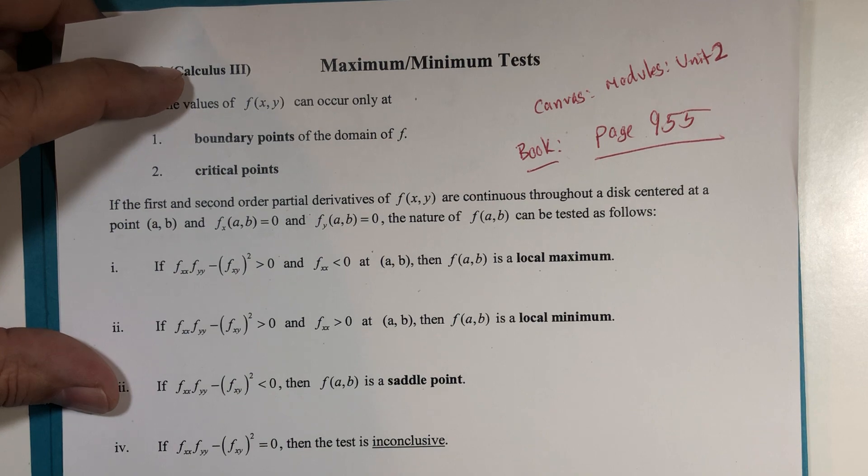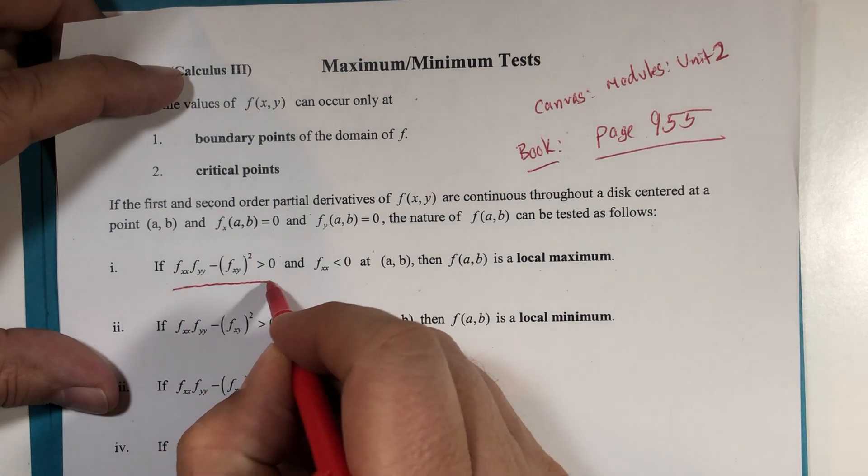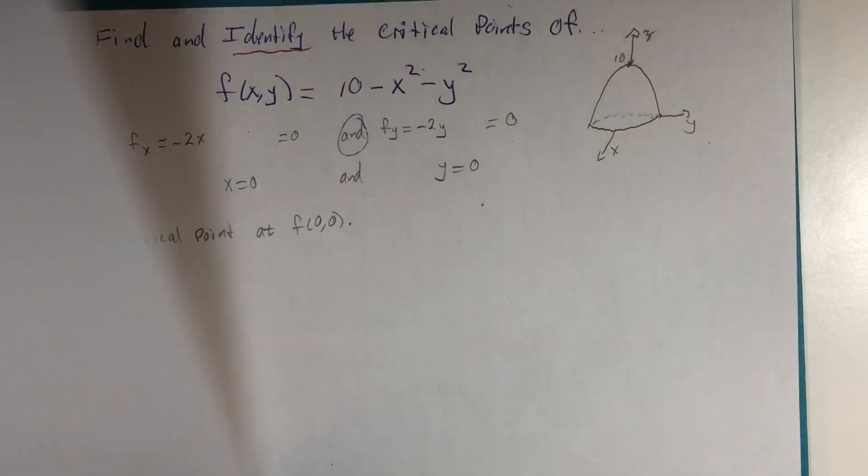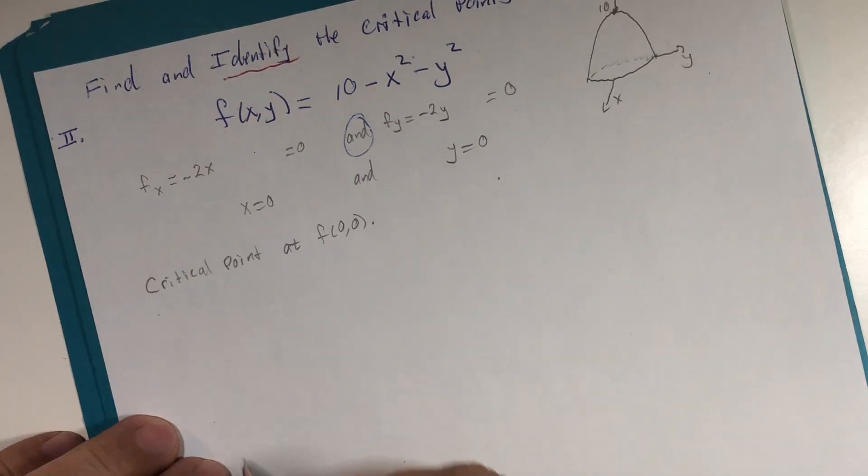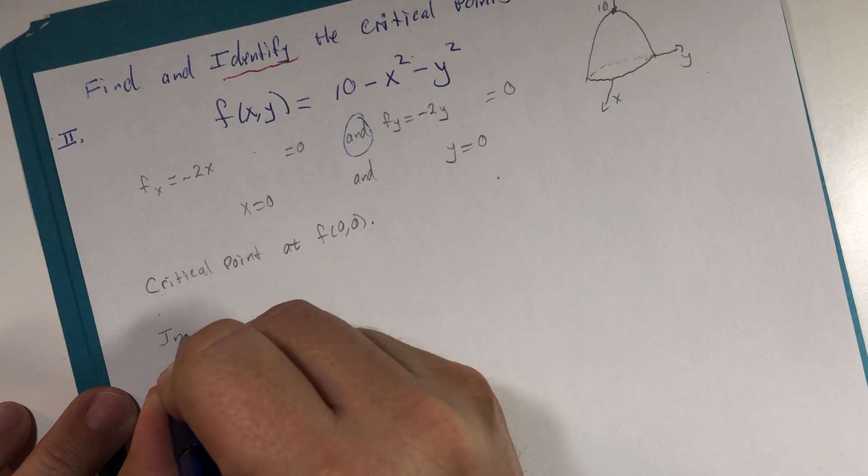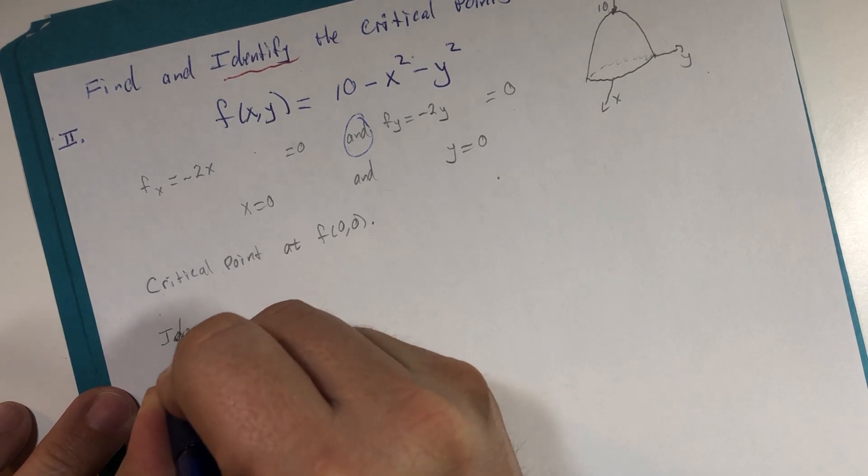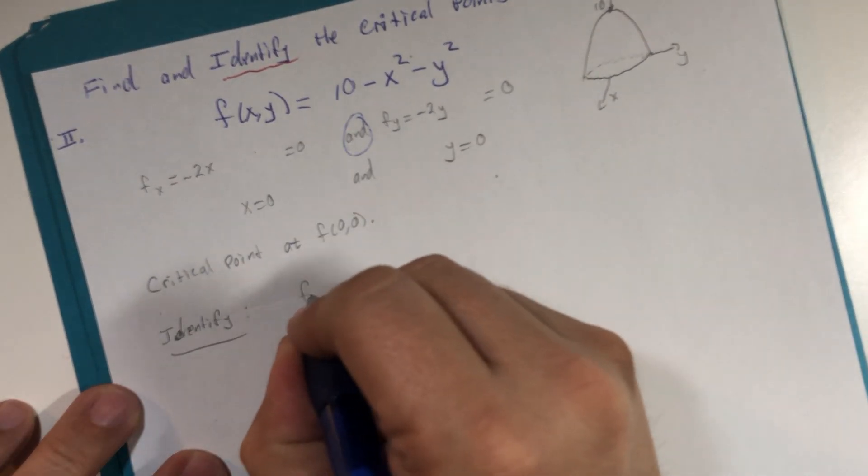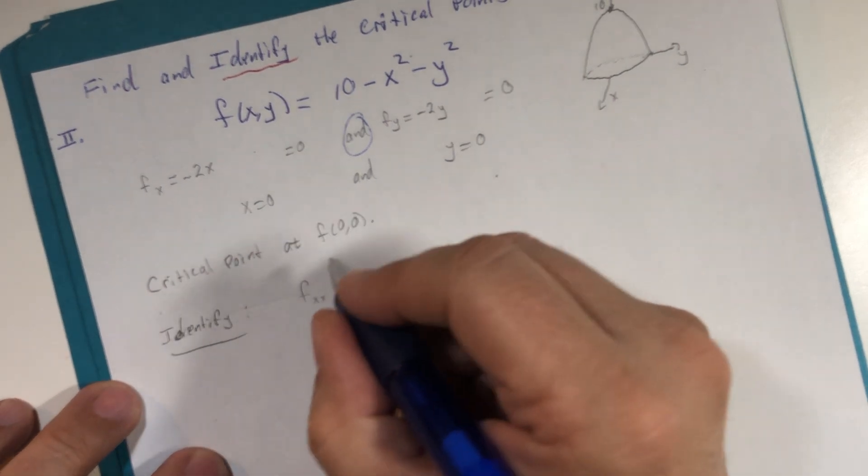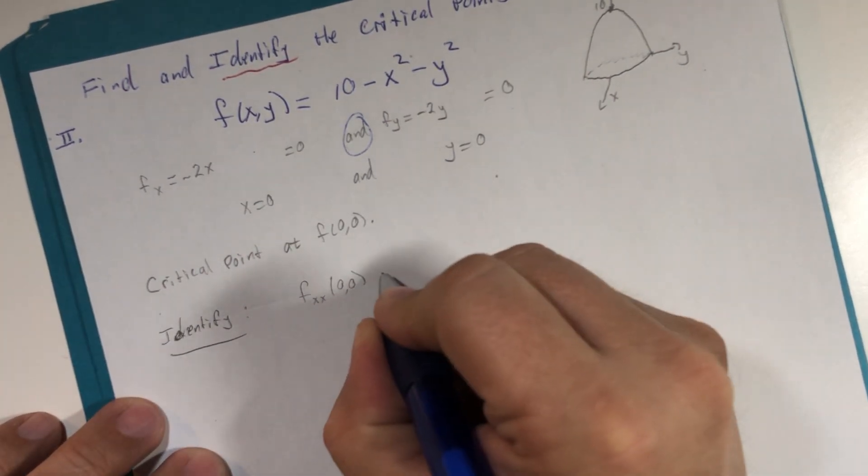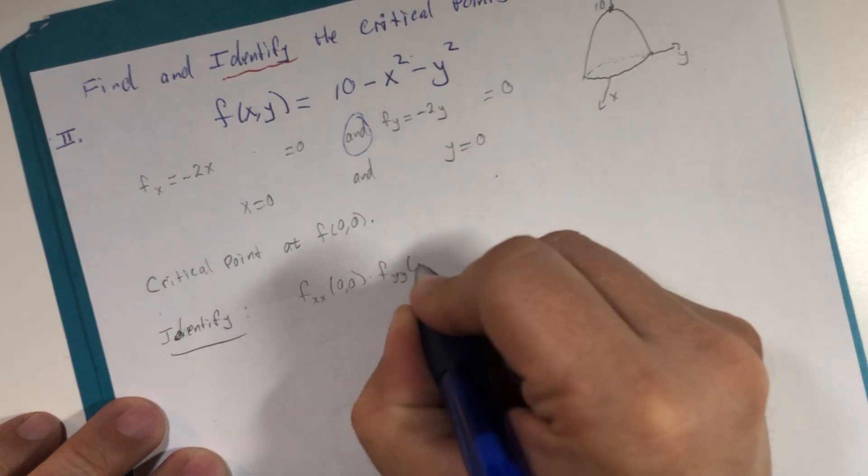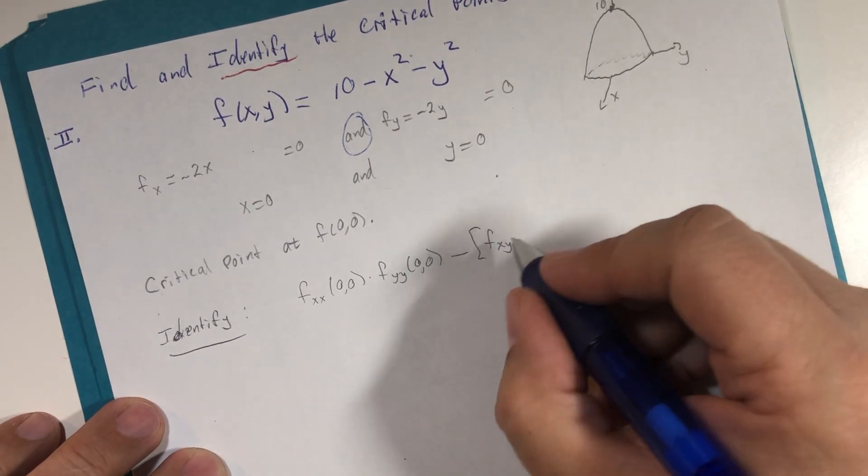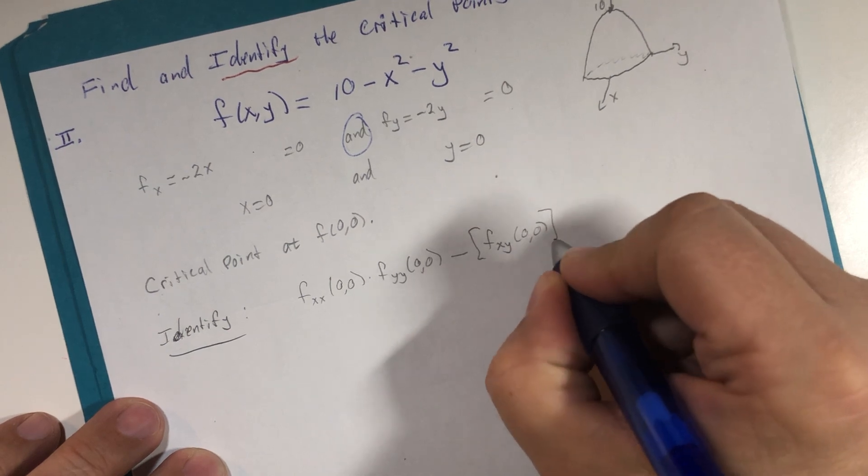So I'm going to slide this back. But before I do so, let me just highlight, this is the key calculation. And it's even paraphrased on my typed up formula sheet. Basically, it says if we're going to identify these critical points, we take the second x derivative at the critical point, multiply by the second y derivative at the critical point, and we subtract the mixed derivative, the x and y at the critical point squared.